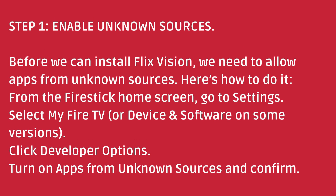Step 1: Enable Unknown Sources. Before we can install FlixVision, we need to allow apps from unknown sources. Here's how to do it. From the Fire Stick home screen, go to Settings. Select My Fire TV, or Device and Software on some versions. Click Developer Options. Turn on Apps from Unknown Sources and confirm.